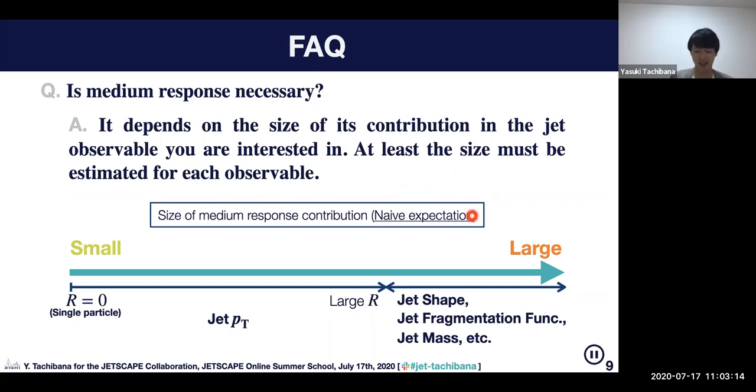Here I have a naive expectation of the size of medium response contribution. If you increase jet cone size, you have a larger region to capture more particles from medium response. For large jet pT, we have a lot of chance to have modification from medium response.